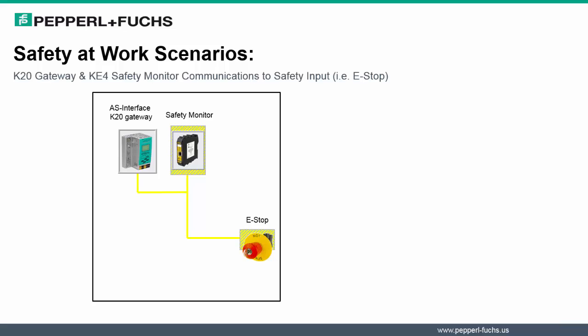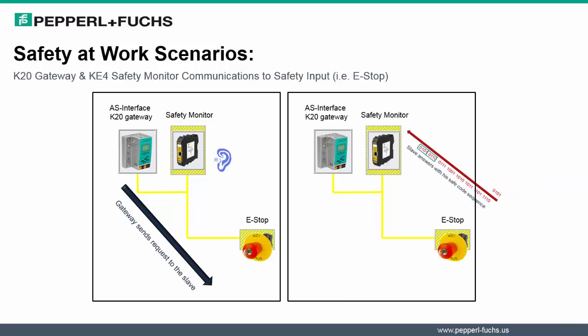Now let's discuss how the prior scenario changes when the K20 gateway works as a separate unit from the safety monitor. As with the prior scenario, the gateway still initiates or sends the request to the slave. However, instead of the gateway listening back for the response, the safety monitor, the separate unit, is listening for the response back in this scenario. The slave again responds back with its safe code sequence. Once the safe code sequence has been transmitted from the module to the AS Interface gateway, special rules are used by the safety monitor to determine whether the e-stop has been activated.